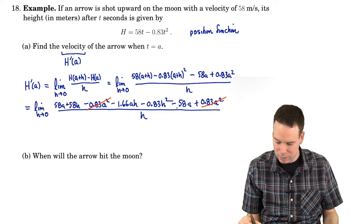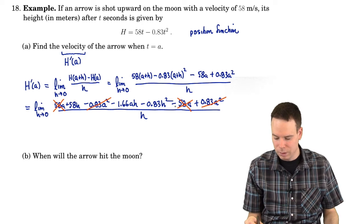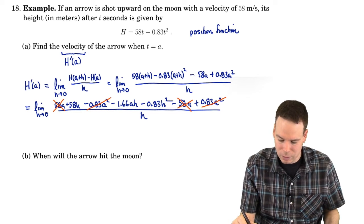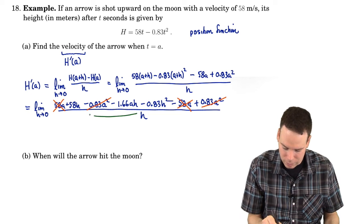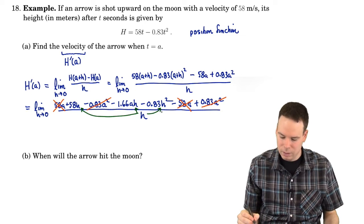Minus the 58a that's there plus the 0.83a squared all over h. And now I'm happy because look 0.83a squared cancels with 0.83a squared. The only other thing that doesn't have an h in it is this 58a. That 58a cancels with this 58a because of the minus sign in front of the second one. Now I've got all of those things cancelled. The only things surviving in the numerator have h factors in them. So I can divide that into each one of them.